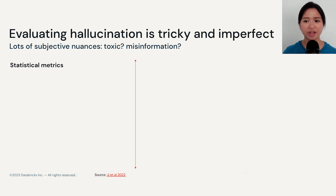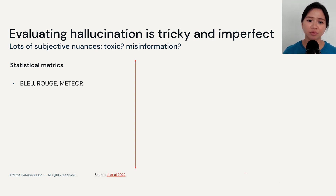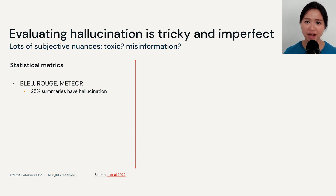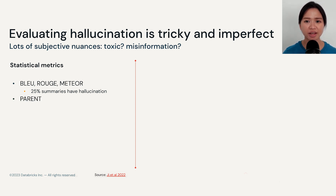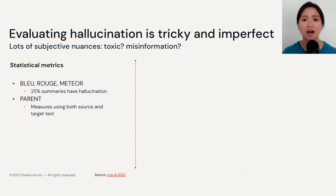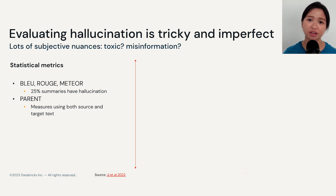The first category is statistical metrics. BLEU, ROUGE, and METEOR have been around for some time in NLP. Using these metrics, we see that approximately 25% of summaries contain hallucination — unsupported information. Another metric called PARENT measures hallucination using both source and output text, using n-grams behind the scenes to capture what is in the source versus the target, then calculates an F1 score.